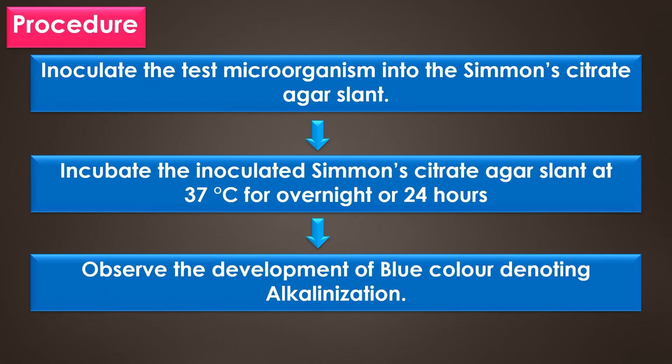Procedure: inoculate the test microorganisms or test bacteria into the Simmons citrate agar slant and incubate the inoculated slant at 37 degrees Celsius overnight or for 24 hours. Some organisms may require up to 7 days of incubation due to their limited rate of growth on citrate medium.